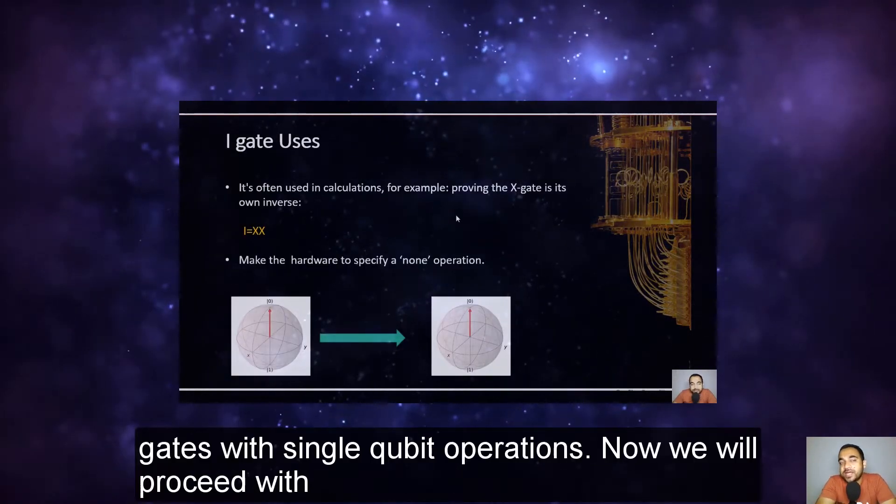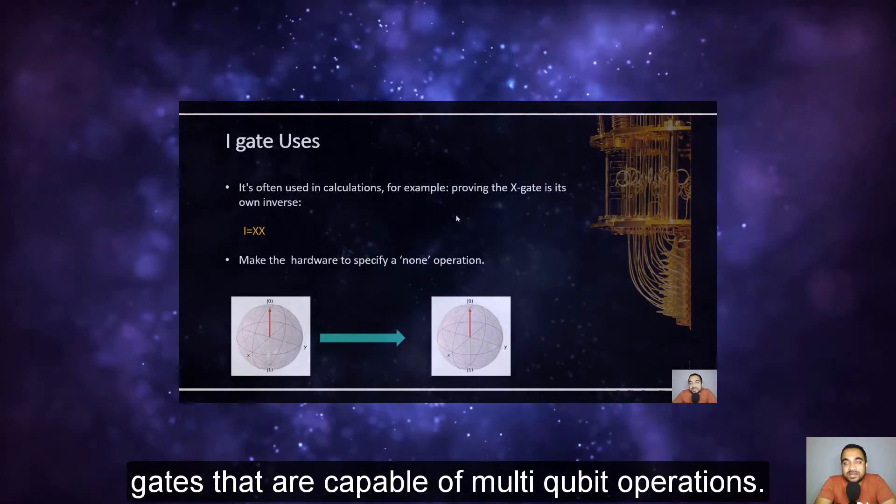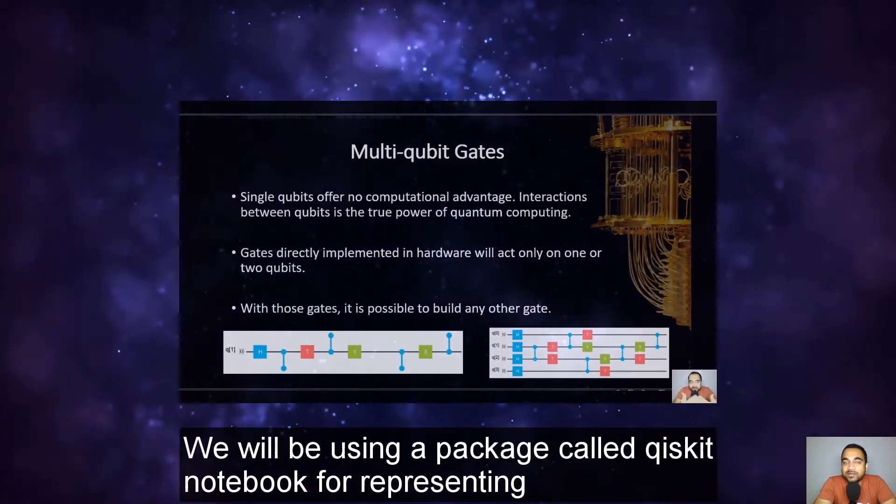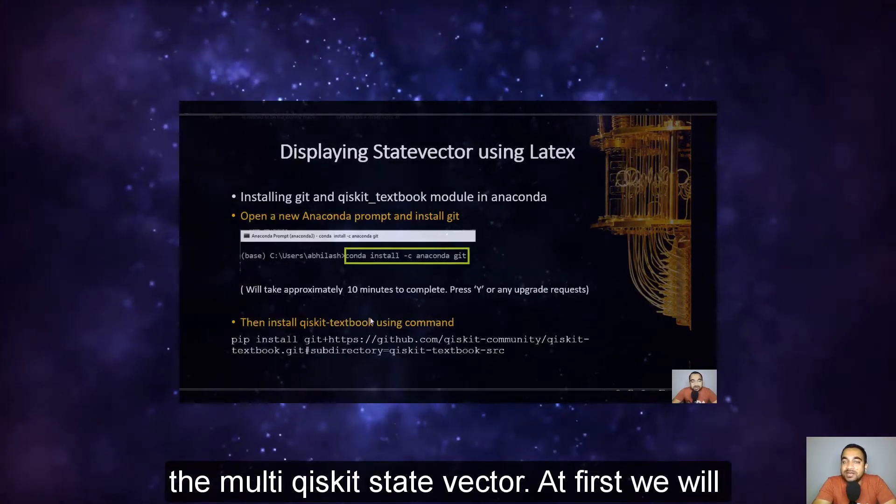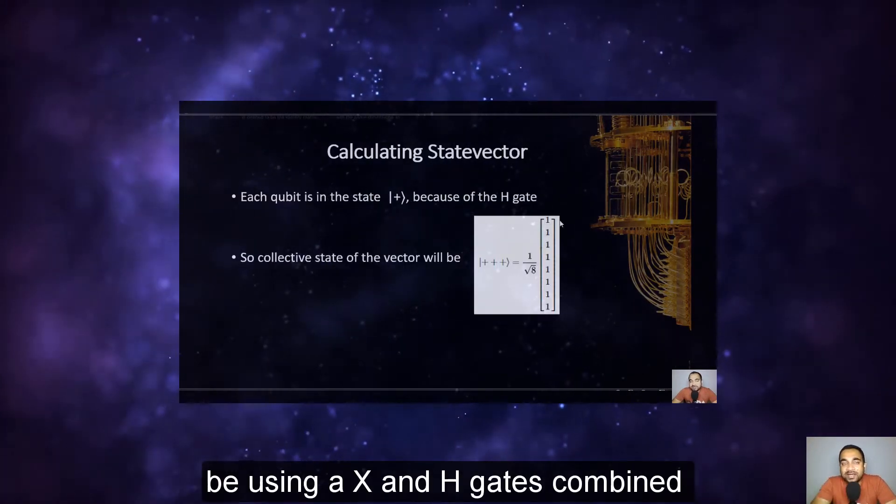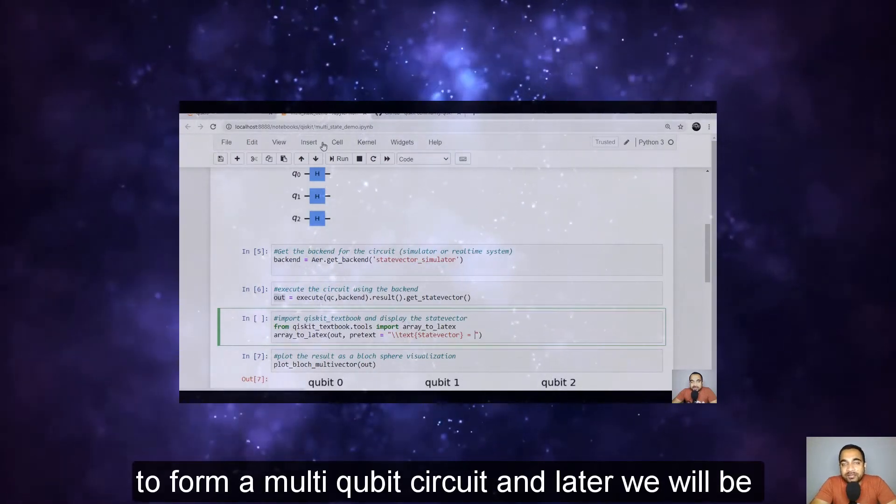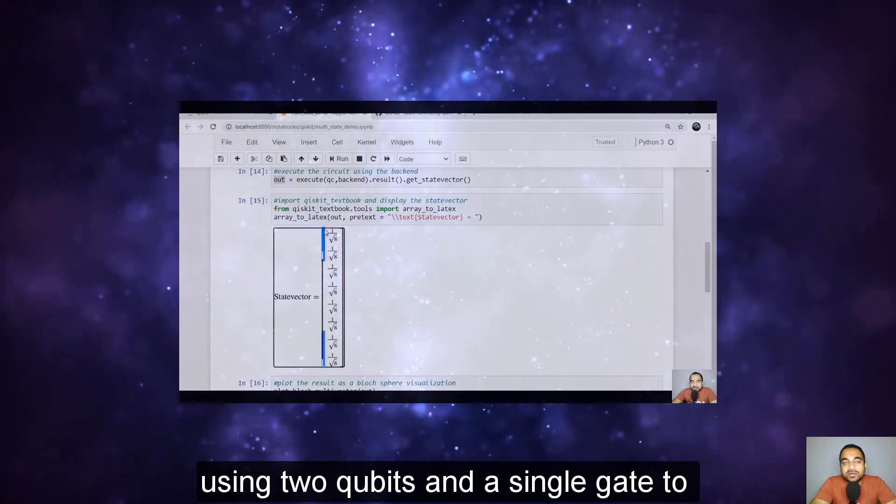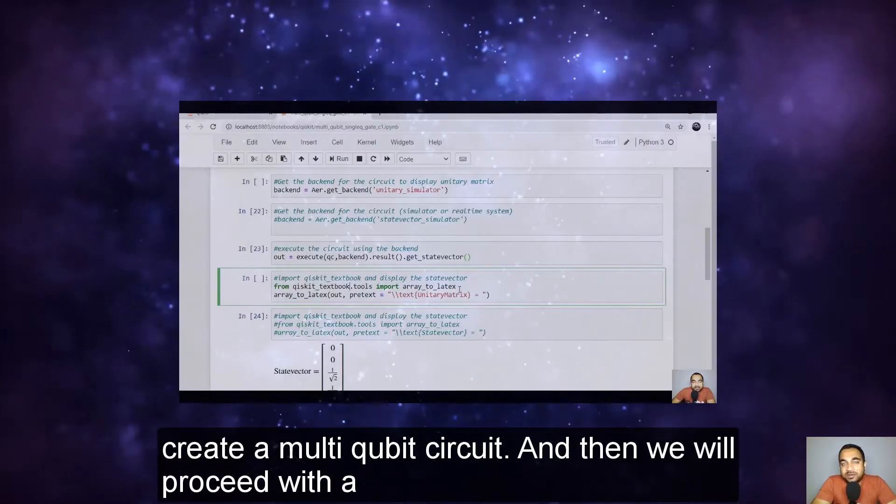Those were the gates with single qubit operations. Now we will proceed with gates that are capable of multi-qubit operations. We will be using a package called Qiskit Notebook for representing the multi-Qiskit state vector. At first we will be using X and H gates combined to form a multi-qubit circuit. And later we will be using two qubits and a single gate to create a multi-qubit circuit.